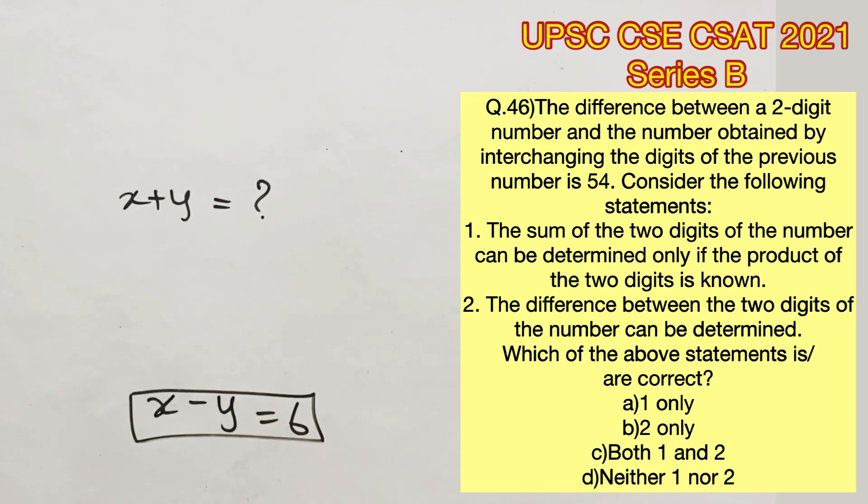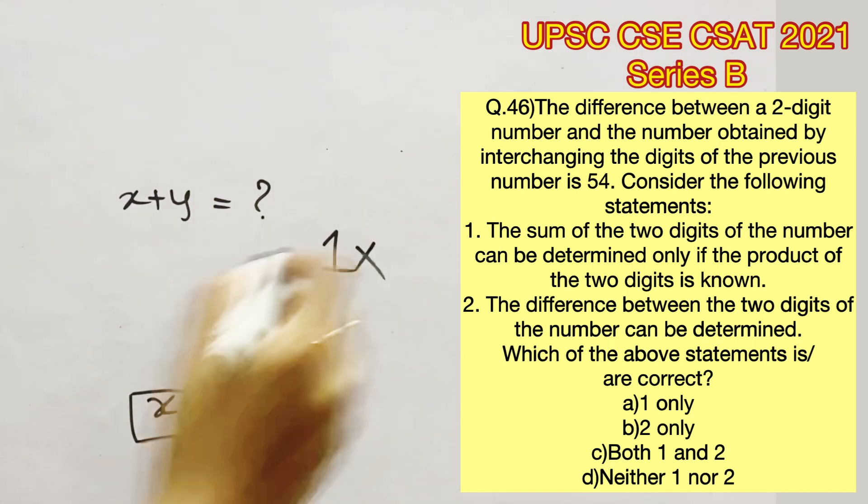The first statement says the sum of the two digits can be determined only if the product of the two digits is known. This is not necessarily true because it is not compulsory that only the product of these two digits should be known. We can even have another equation where the value of y is said or the value of x is said. So it's not compulsory that only the product of these two digits should be known to find the sum. So we can eliminate the first statement.